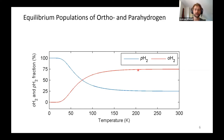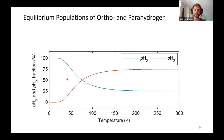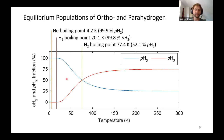However, ortho-para transitions are symmetry-forbidden — they cannot happen spontaneously because the molecule would require a simultaneous change in both nuclear spin and rotational wave function symmetry. Therefore, a second strong magnetic dipole moment is introduced as a catalyst to enable these transitions. Going to 77 K (liquid nitrogen boiling point) gives approximately 50% parahydrogen enrichment; at 20 K (near the hydrogen boiling point) we reach 99.8% parahydrogen.